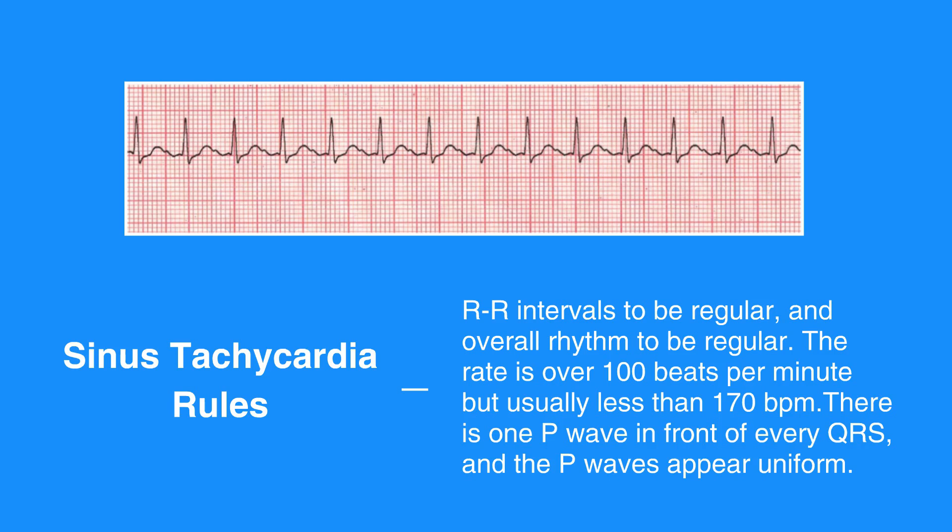The PR interval measures between 0.12 and 0.2 seconds in duration and is consistent. The QRS complex measures less than 0.12 seconds.